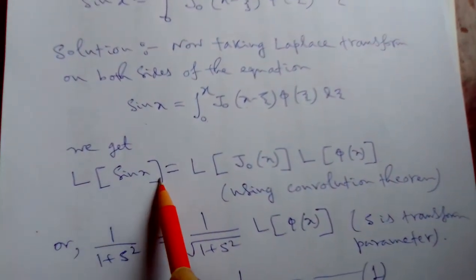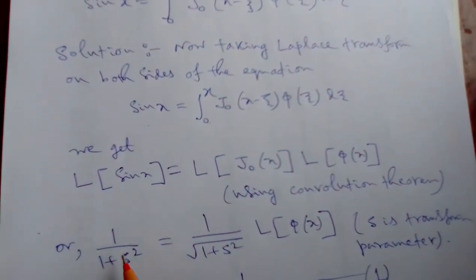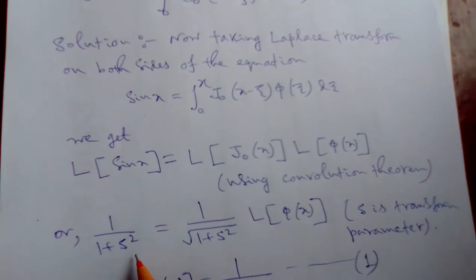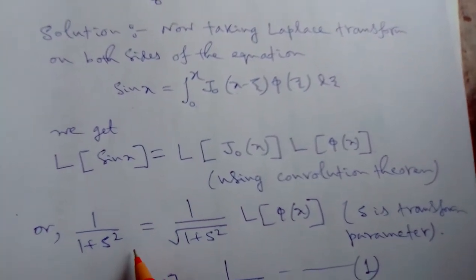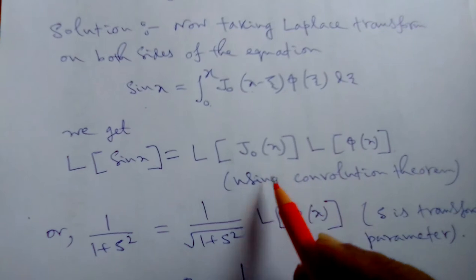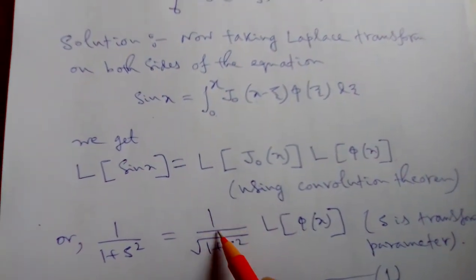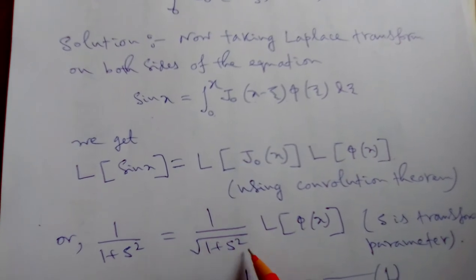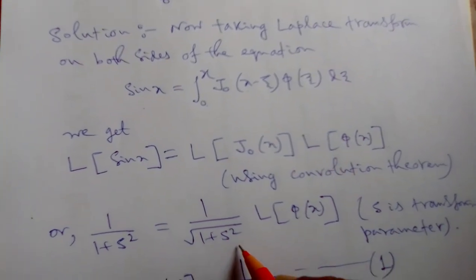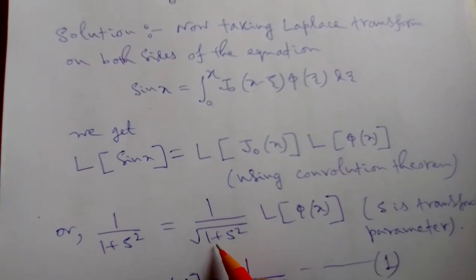Now, using Laplace transform of sin x, that is 1 by 1 plus h squared if h is the transform parameter, and here L of j0(x) is the standard formula 1 by root of 1 plus h squared. We discuss how will it come in my earlier videos.